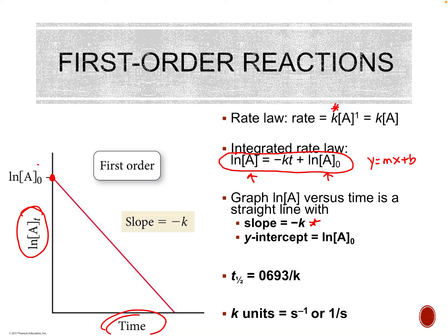Our half-life for first order is not dependent on concentration. Our half-life equation is t½ = 0.693 / K. It is concentration independent, so once you figure out the half-life, it's going to be the same every time — every half-life happens every 10 minutes, or every 20 minutes, or whatever the case may be. Our units for K in first order are s⁻¹, or 1 over seconds.